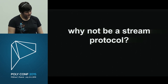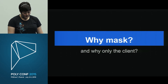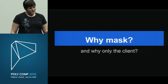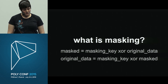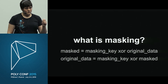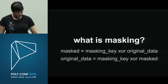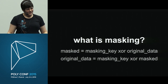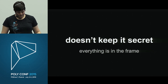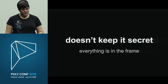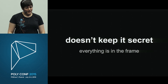Why are we masking data from the client, and why only the client? Masking means you XOR the 4-byte masking key with the original data — going through each byte and repeating the key — to produce the masked data in the frame. The server does the same operation to get the original data back. You might notice this isn't keeping anything secret — anybody who wants to read the data can read it. But it is actually a security measure: it prevents a cache poisoning attack.